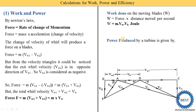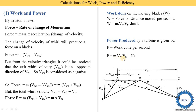Next we find out the power produced by the turbine. Power equals work done per second, so power equals m times Vw times Vb. The unit is Joules per second, which is also written as Watts.